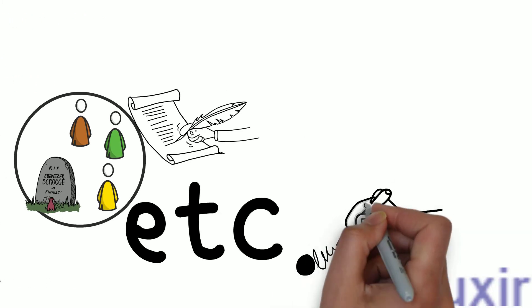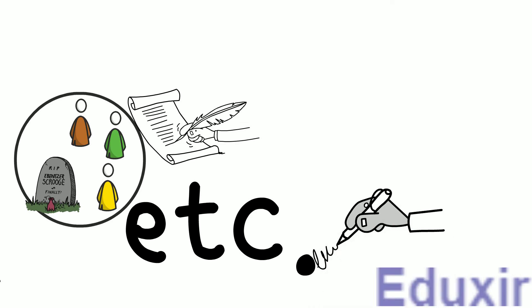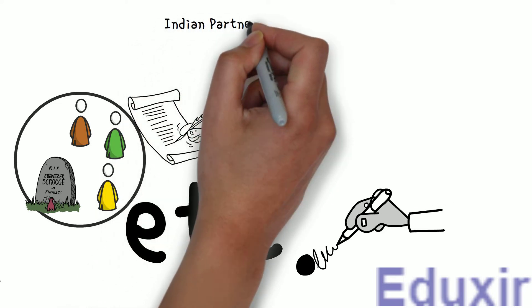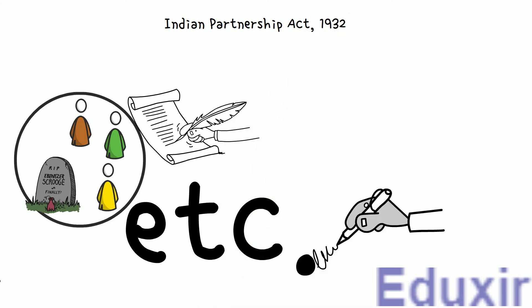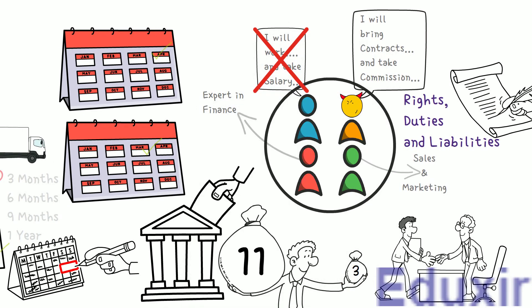Any other matters related to the conduct of the business should also be documented. The partnership deed should cover all the matters affecting the relationship of partners among themselves. However, if there is something not documented in the partnership deed, then the provisions of the Indian Partnership Act 1932 should be referred to. For instance, if the partnership deed is silent about the salary of a partner and a partner demands a salary, we should consult the Indian Partnership Act 1932. As per the Act, if the partnership deed is silent about the salary of a partner, then no salary should be paid. From all of this, it is clear that the provisions of the partnership act play a significant role when preparing the partnership deed.